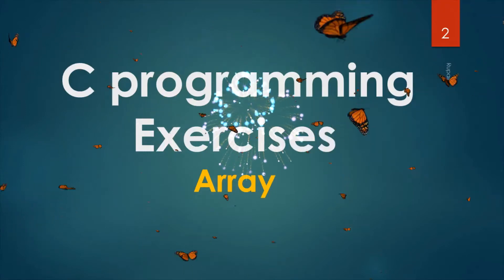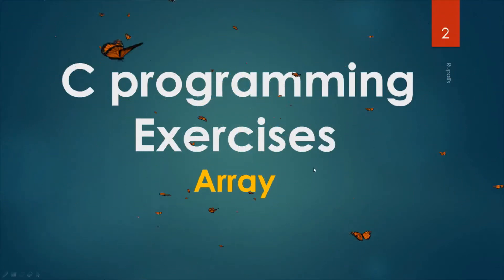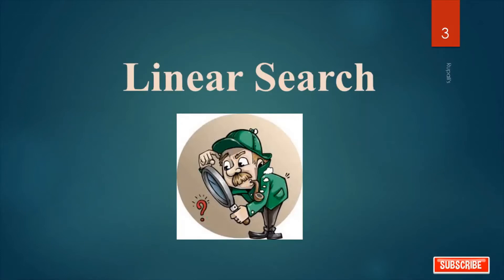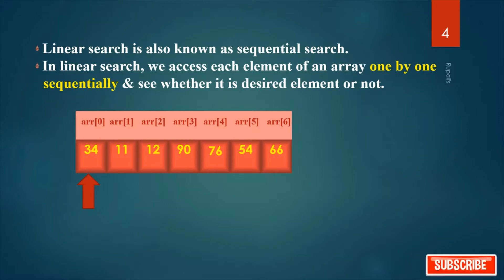Today we will learn another example from arrays: linear search. Linear search is also known as sequential search. In linear search, we access each element of an array one by one sequentially and see whether it is the desired element or not.